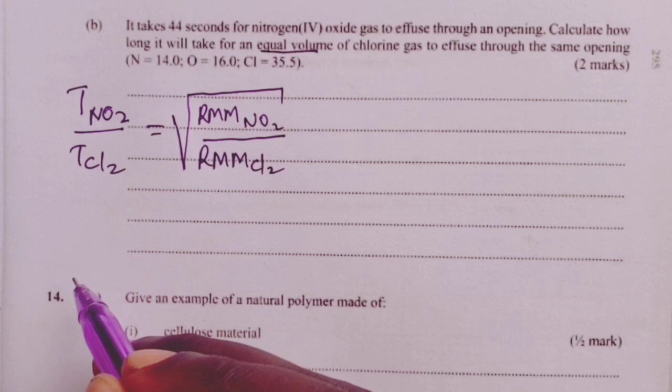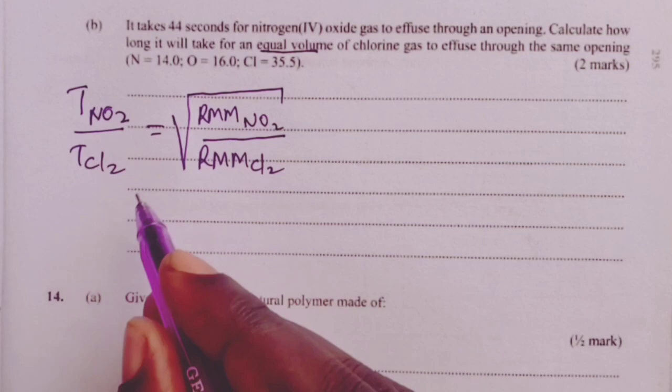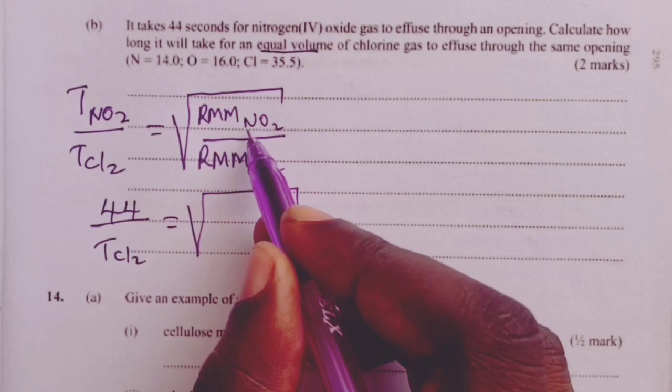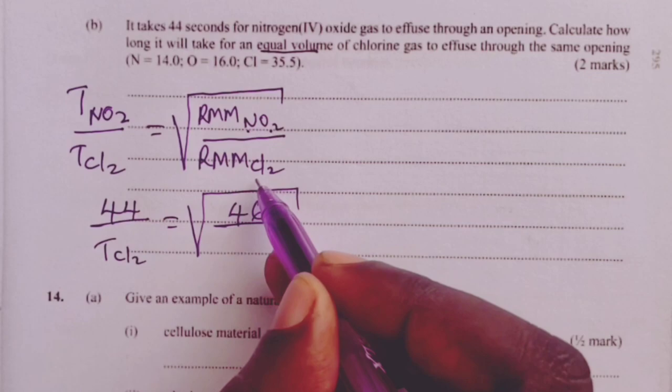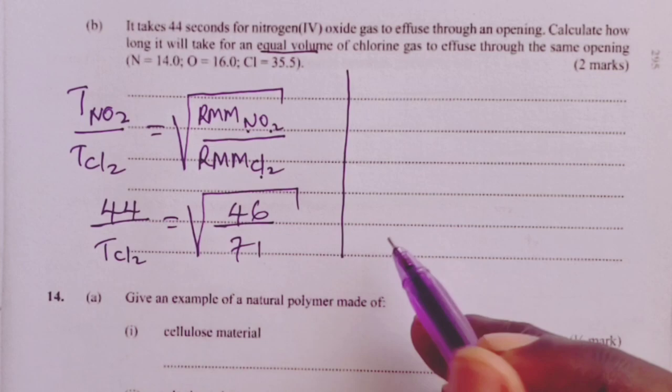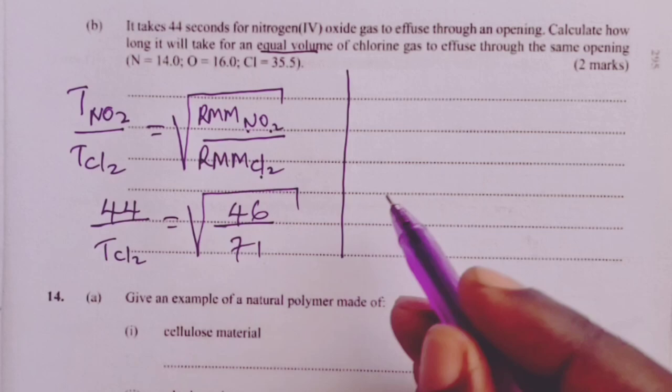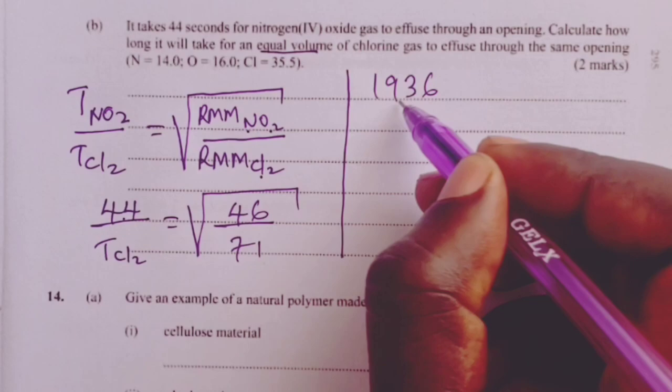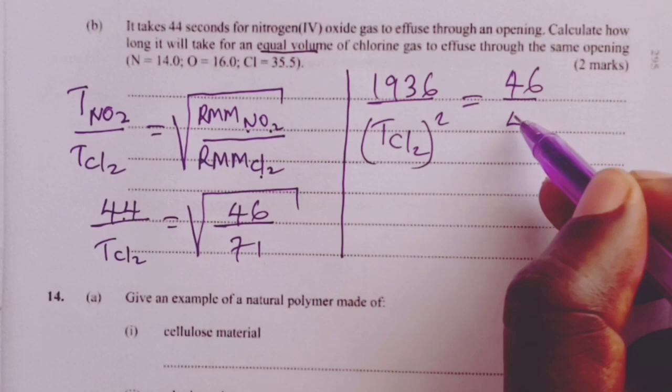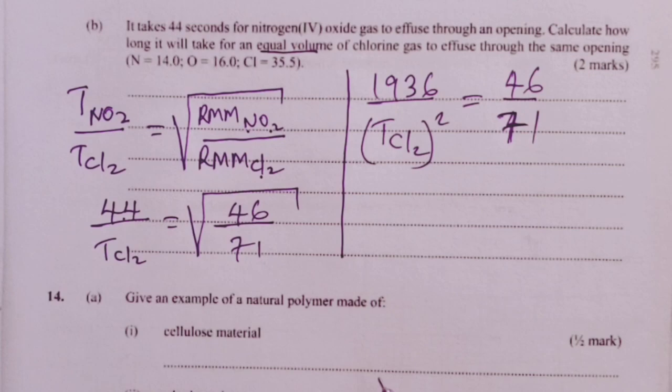Once we have gotten the correct formula, we are supposed to substitute the values that we have in the question. Time for nitrogen-4 oxide is 44. Time for chlorine is what we are looking for. Relative molecular mass for nitrogen-4 oxide would be 14 plus 32 giving me 46. For chlorine would be 35.5 times 2 giving me 71. To solve for TCl2, it would be mathematical from this point. To remove the root, I would square both sides. Square of 44 is 1936. Square of time for chlorine remains square of time for chlorine. On the right-hand side, my square root symbol would go away after I square.